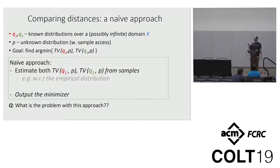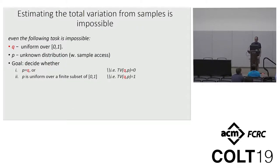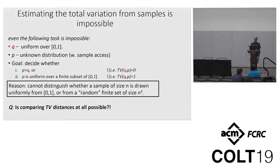The problem is that we cannot estimate total variation distance. In the definition, we have the supremum over an exponential number of events or even infinity in infinite domains. We cannot even determine whether an unknown distribution is uniform over the zero-one interval or is just uniform over a finite set of the zero-one interval. The reason is the birthday paradox. There is no chance to estimate the total variation distance. We cannot even distinguish whether it's zero or one.